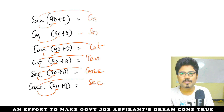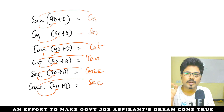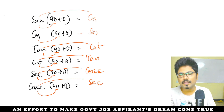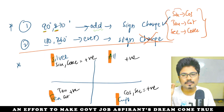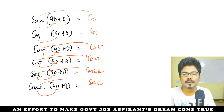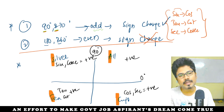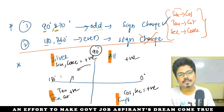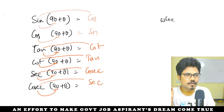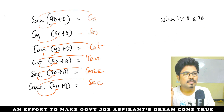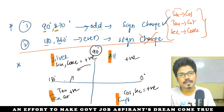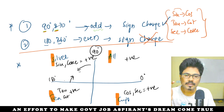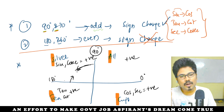Now comes the actual highlight — because in SSC CHSL the questions come from here. When theta is acute, meaning theta is between 0 and 90, then 90 plus theta will fall between 90 and 180. So 90 plus theta lies in the second quadrant. In the second quadrant, sin is positive.